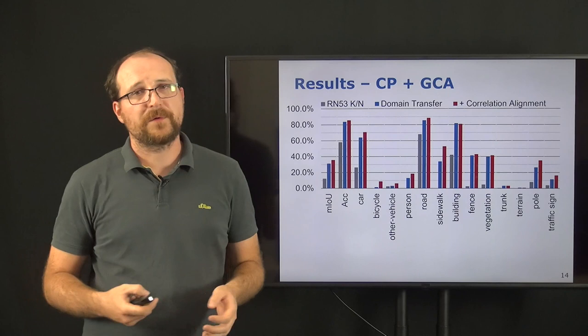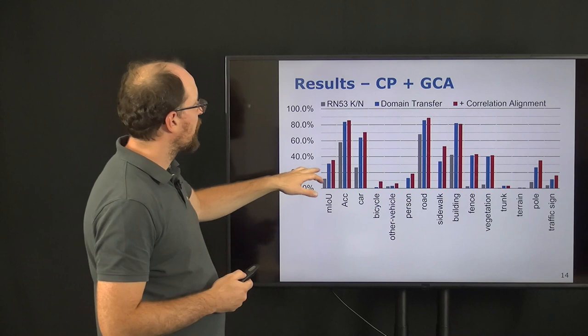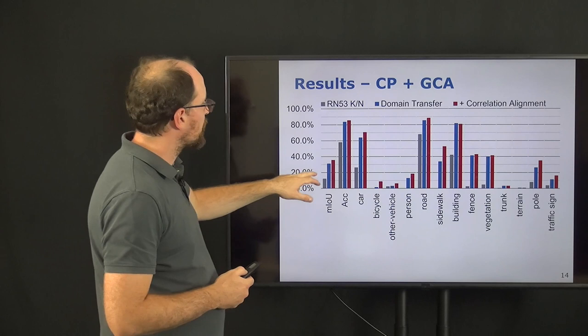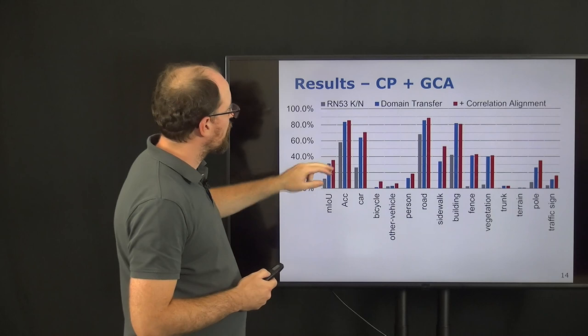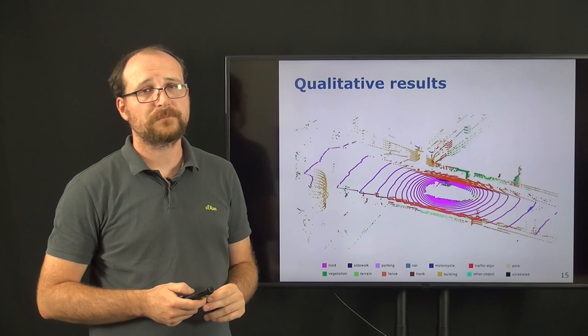When we then furthermore use the correlation alignment, we can see furthermore that we can improve the results of all classes, but also in terms of mIoU. So that means we are achieving something around 31 percent for just using domain transfer. And when we then use additionally the correlation alignment, we can increase it to 35 percent of mean intersection over union.